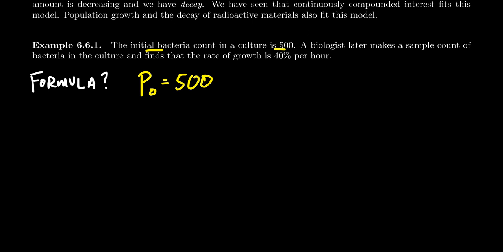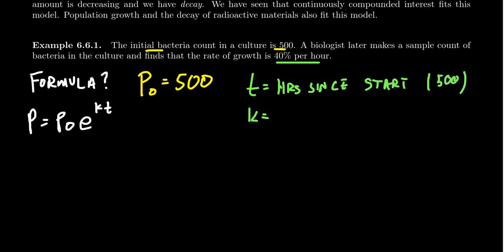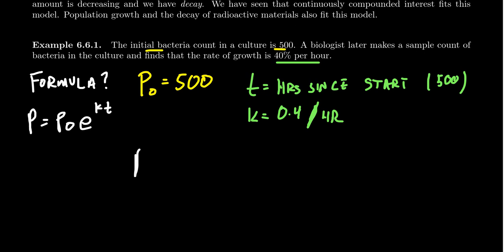Our goal for our formula is going to look something like the population equals an initial population times e to the kt. The initial population is 500. The bacteria is growing at a rate of 40% per hour. This tells us two things: t is going to be measured in hours since the start, the 500 mark. And our growth rate k is going to be 40%, so 0.4 per hour. Rates are always ratios—something per whatever. When we put that together, we see that our model is the population with respect to time equals 500e to the 0.4t, and we're going to measure growth in hours.